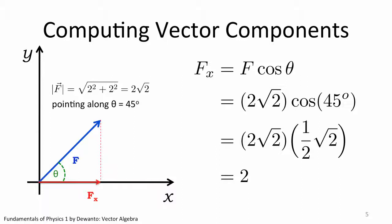And this is given by F cosine 45 degrees. Indeed, if you do your calculation correctly, you will get 2, which is the expected answer. Can you now find out what is the component of F along the vertical direction?